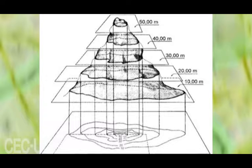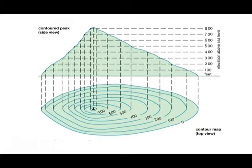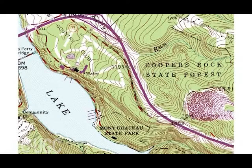An area of low slope generally uses contour intervals of 10 feet or less. Areas that contain mountains or other high slopes can use an interval of 100 feet. Apart from showing just contour lines, topographic maps also use many map symbols to represent their features.